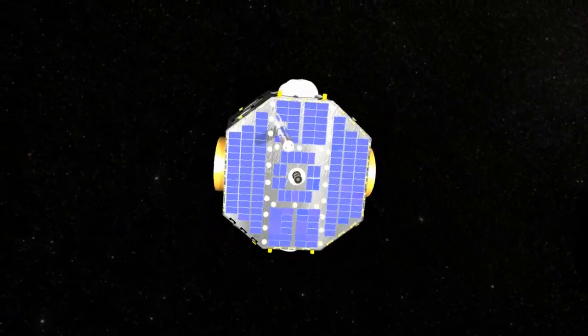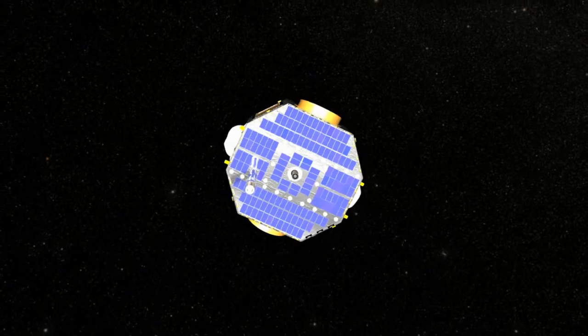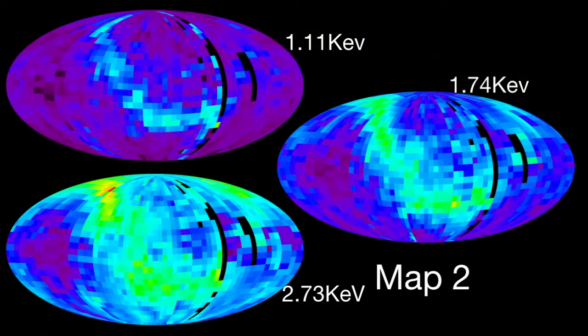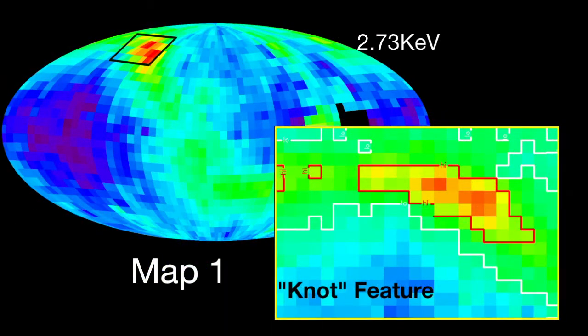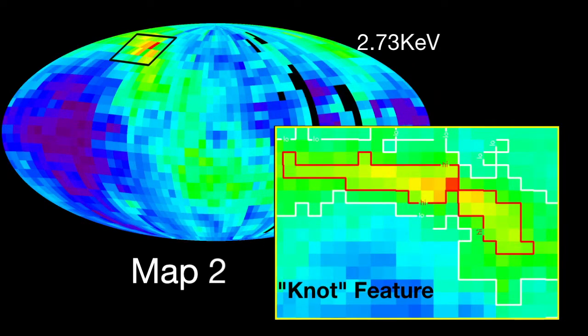IBEX is led by Dave McComas of the Southwest Research Institute in Texas. Its first major discovery was a ribbon of bounced ENAs showing unexpected activity at the edge of the solar system.